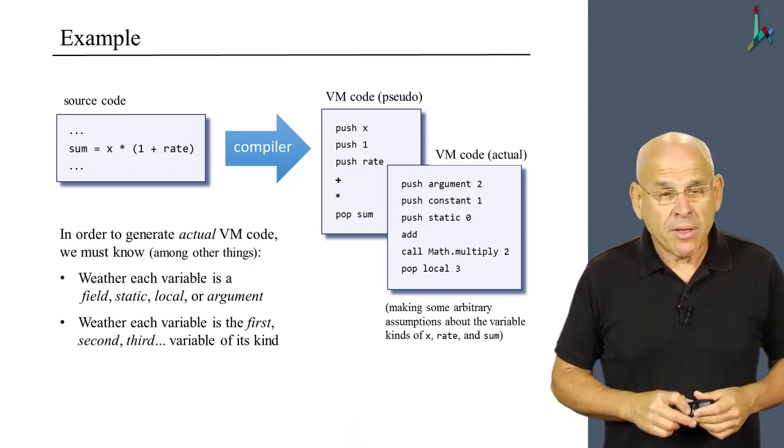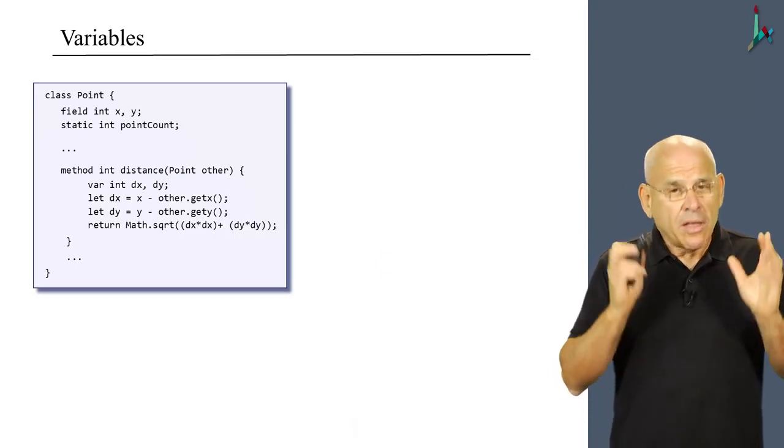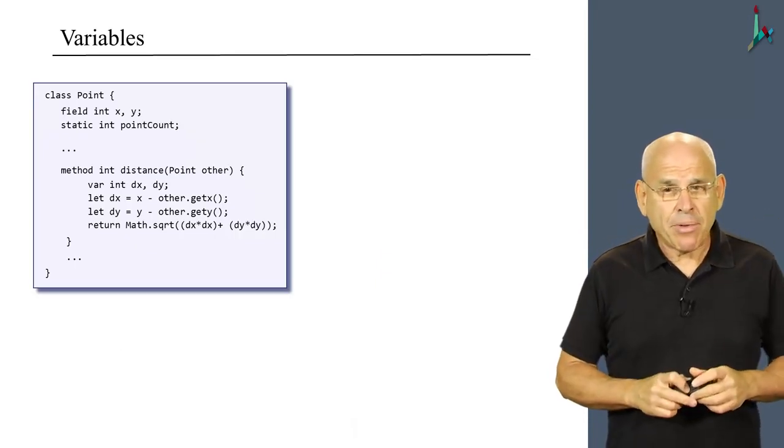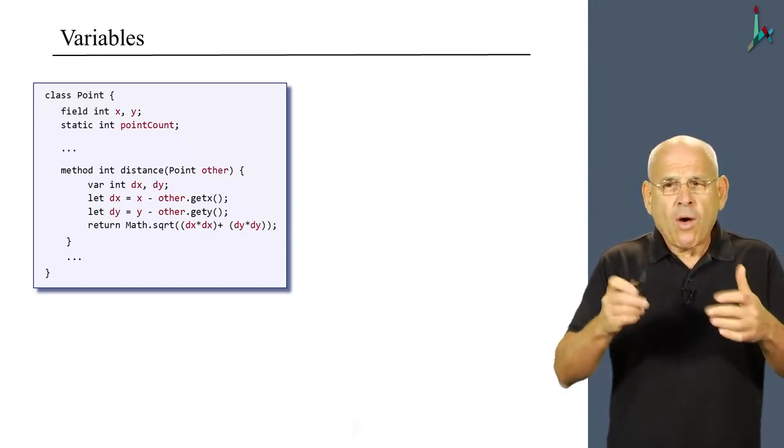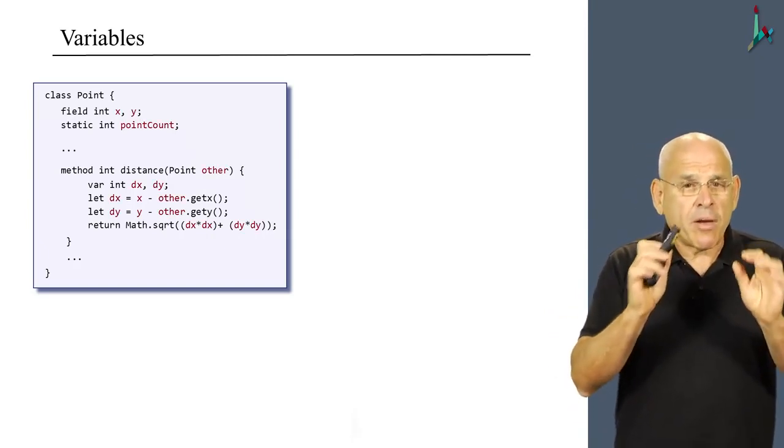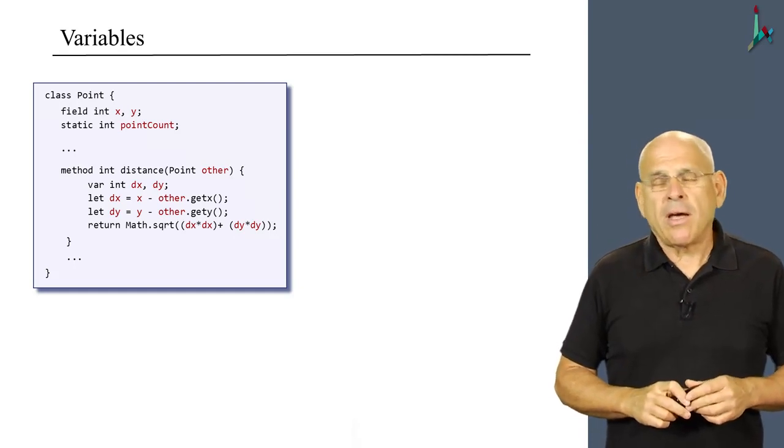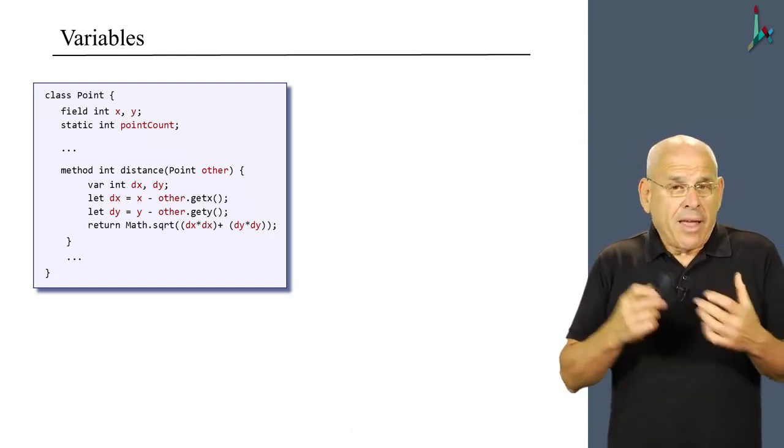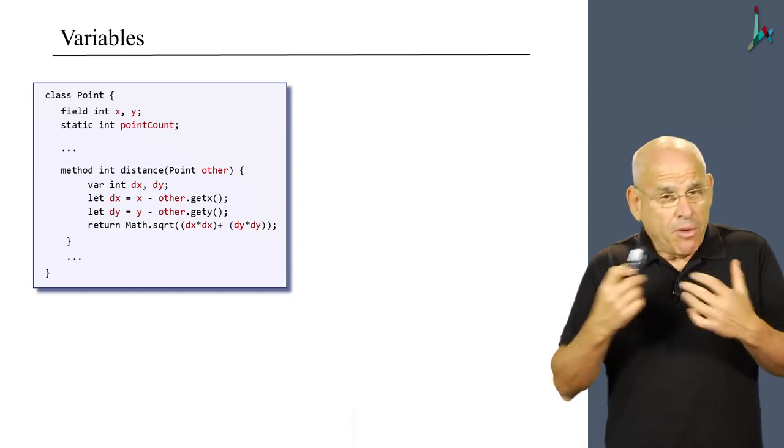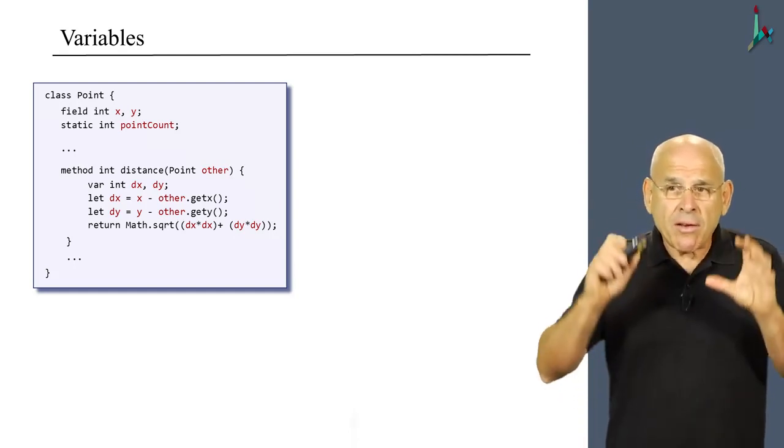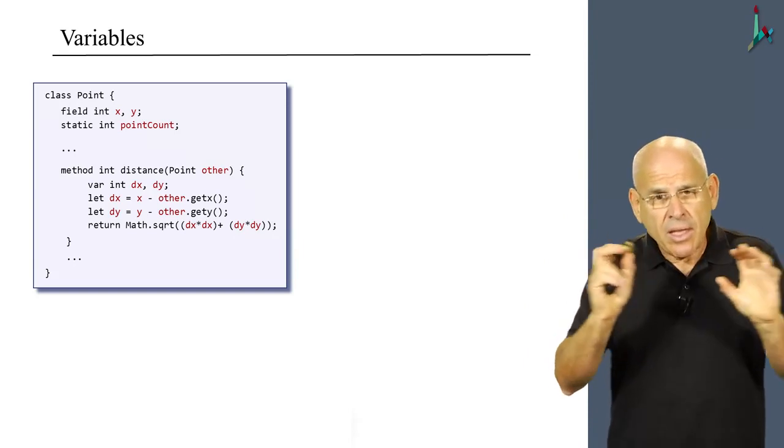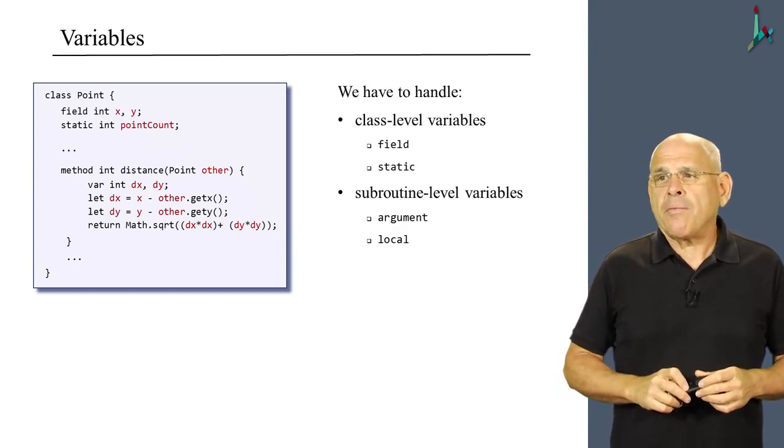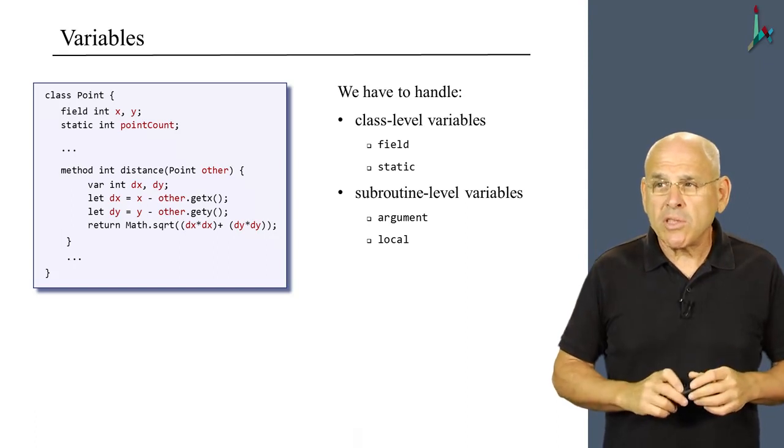So what are these properties? Well, let's look at a more realistic example, a segment of Jack code. And I'm going to highlight all the variables that appear in this code. And earlier, in previous units, I told you that we can focus on the class level code and the subroutine level code in two separate points of focus.